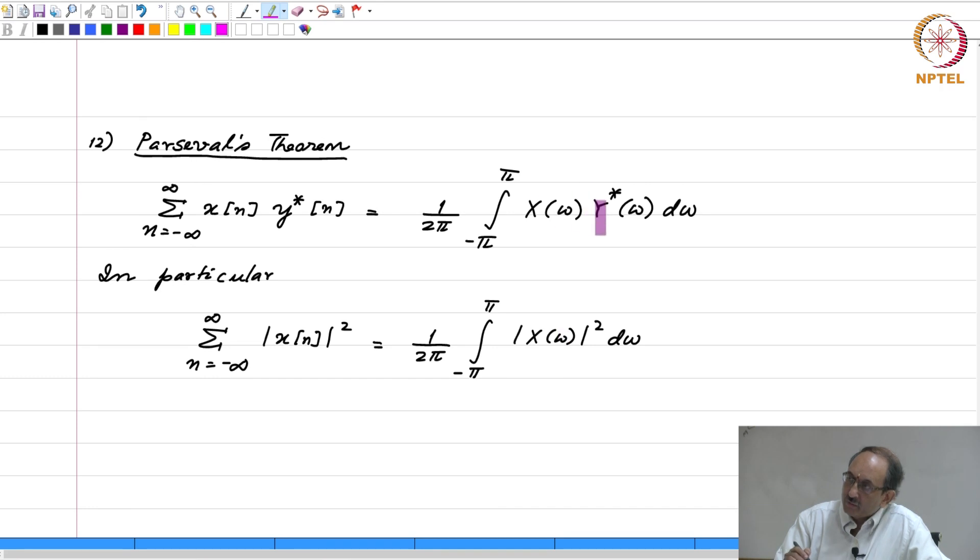So what this theorem states is that the norm in the time domain equals the norm in the frequency domain. Again, here I have stated this for the DTFT case and I am using the x of omega notation rather than x of e to the j omega. And since the norms are equal, this is a statement of the fact that the DTFT is a norm preserving transform. If a transform is norm preserving, this is also called unitary.